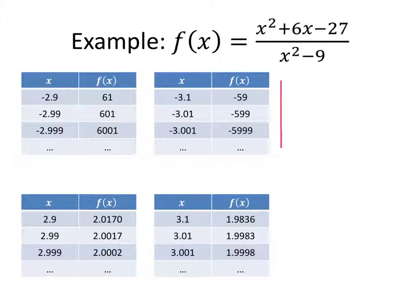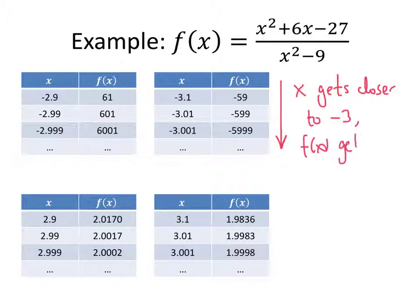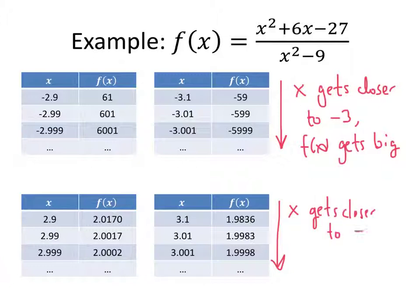So in the first table, as x gets closer to negative 3, f of x gets big. But in the second table, as x gets closer to positive 3, f of x is actually getting closer to 2.